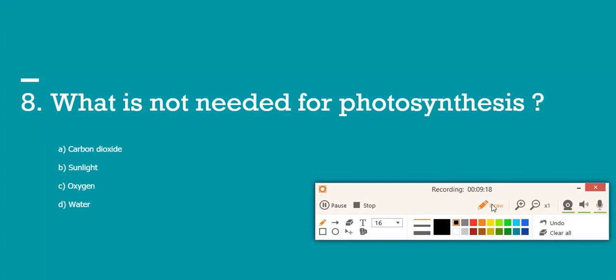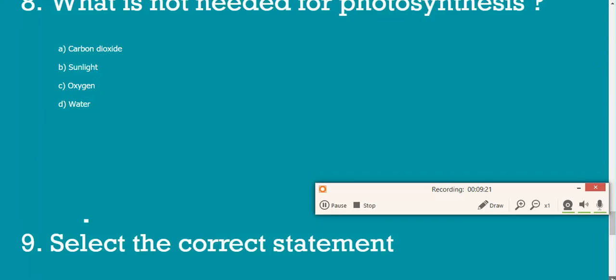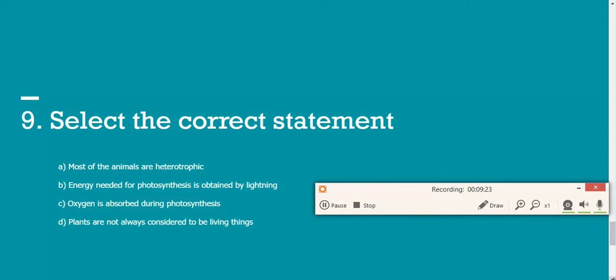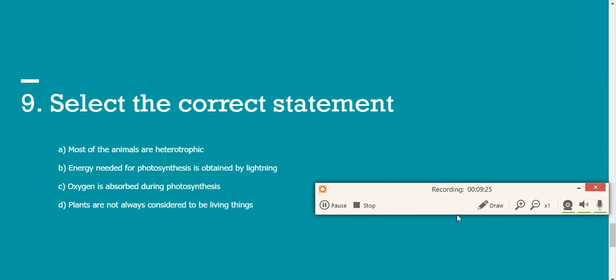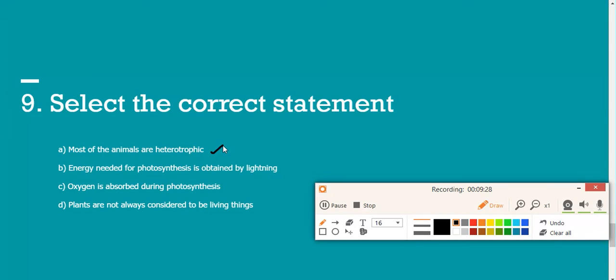Question number nine: select the correct statement. Most of the animals are heterotrophic, meaning depends on plants indirectly, can't produce their own food. Energy needed for photosynthesis is obtained by lightning - no, sunlight. Oxygen is absorbed during photosynthesis - no, is released. Plants are not always considered to be - always they are considered, so that is wrong. So A is your correct answer.